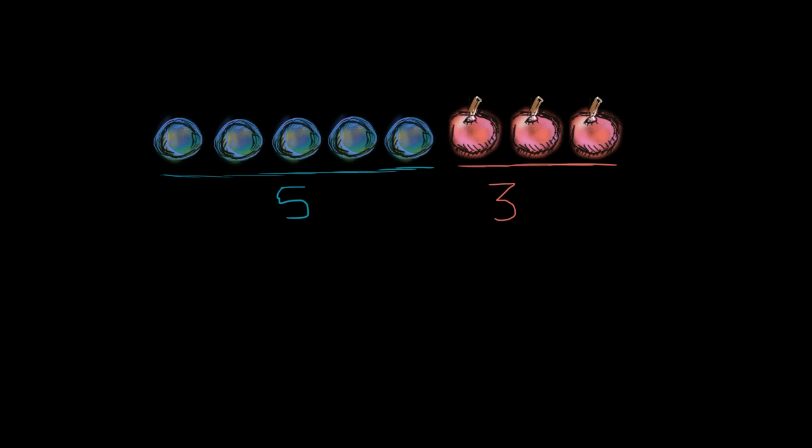So the question is, if we want to calculate how many total pieces of fruit do we have, do we take five blueberries and add three cherries to it? Or do we take our five blueberries and then subtract three from it?